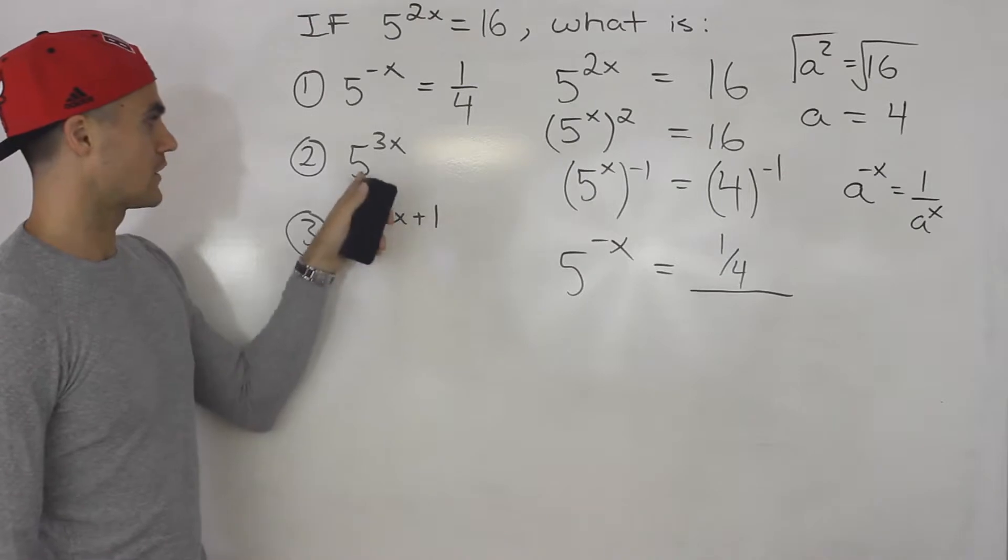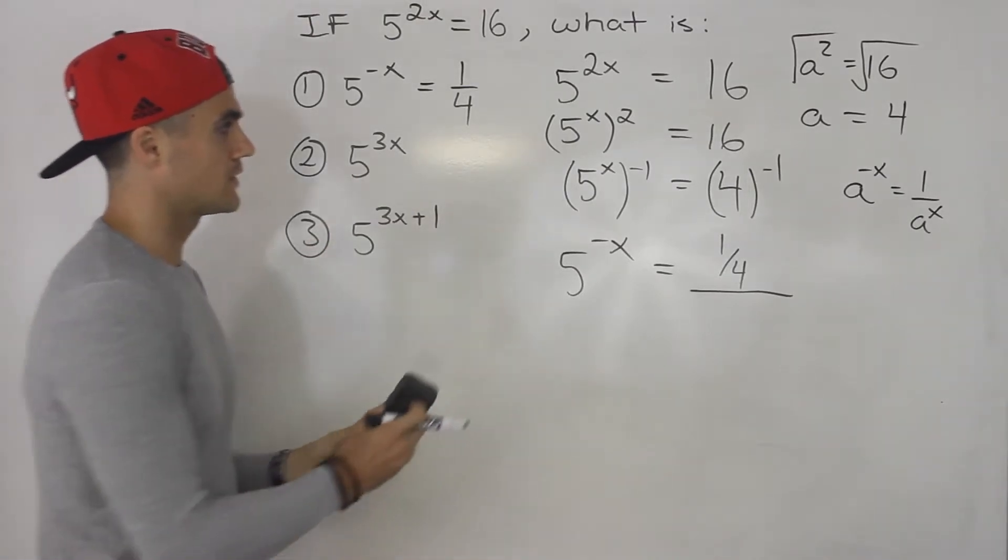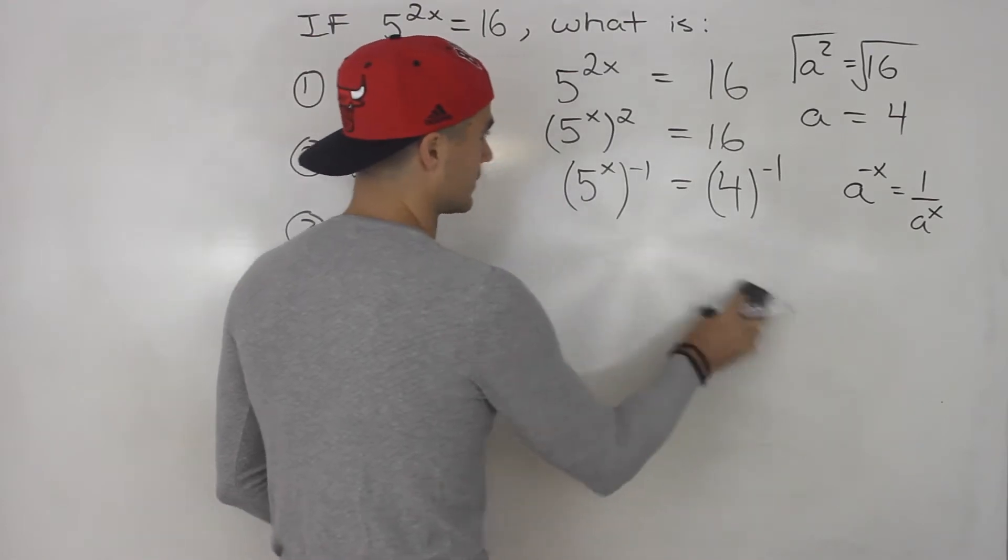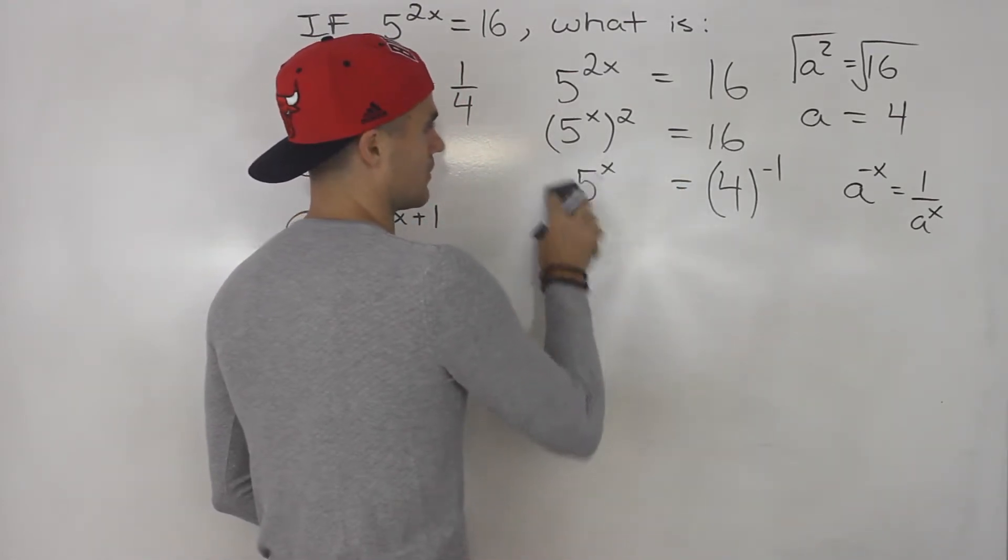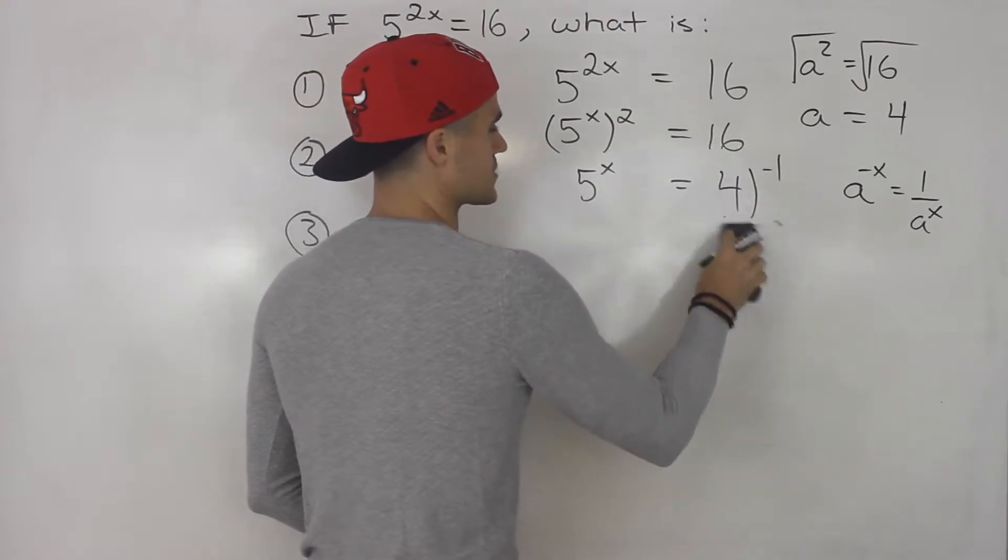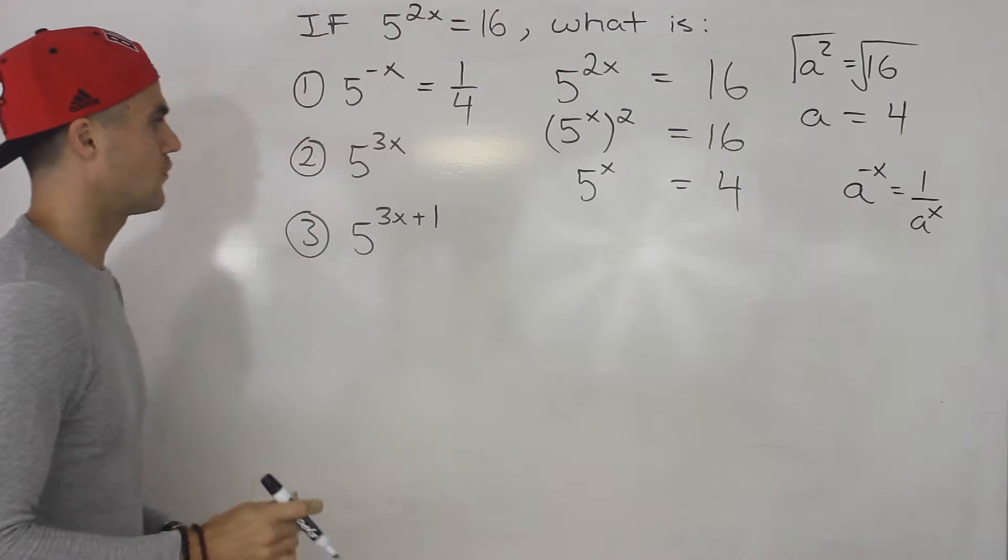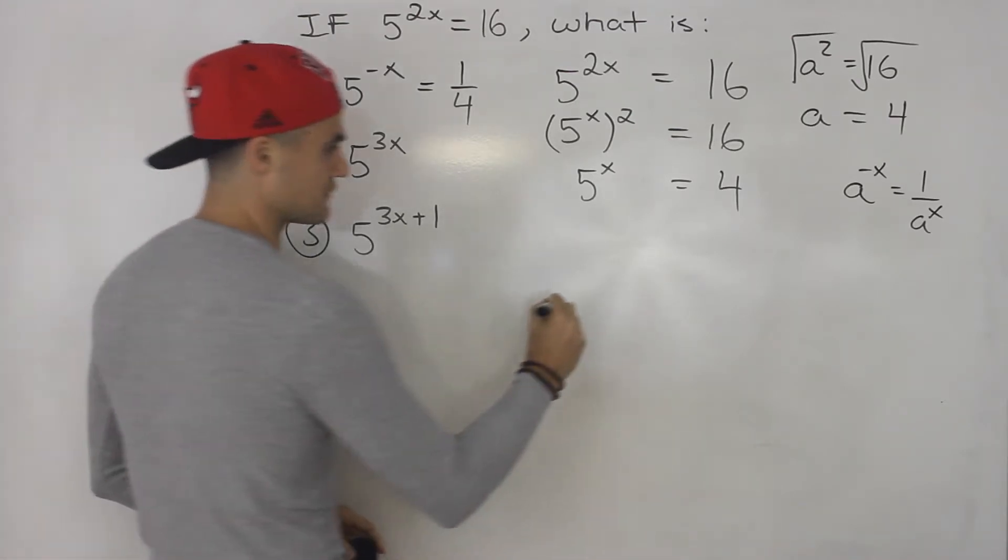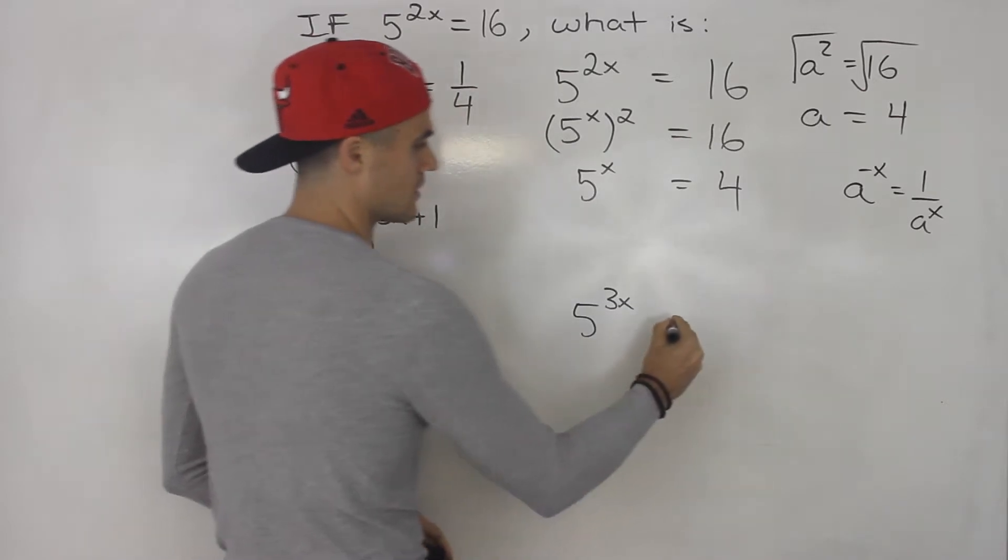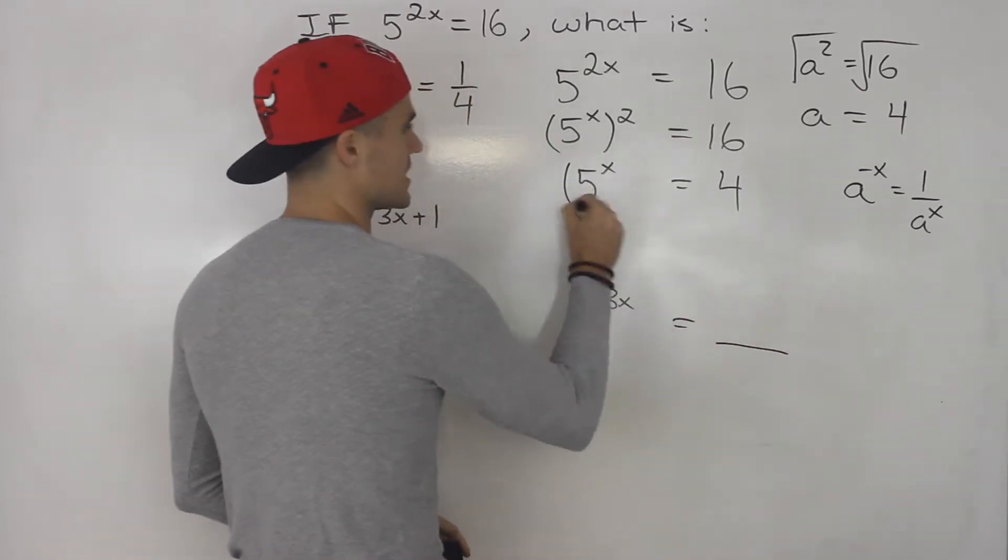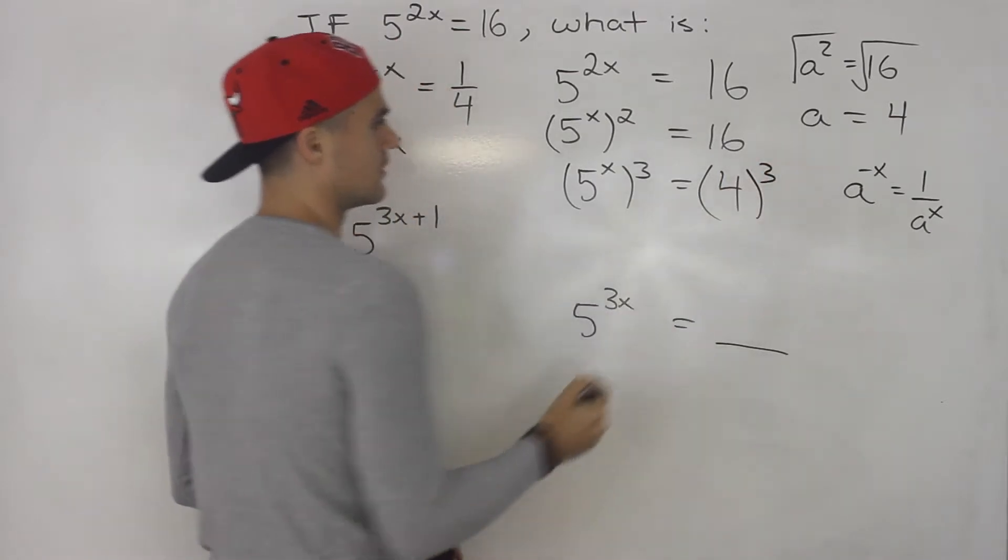Moving on to number 2, we got to figure out an expression for 5 to the 3x. So I would actually leave all of this work here and just maintain this point. So we know 5 to the x is equal to 4. So how can we get to 5 to the power of 3x? Well, we can just take both sides to the power of 3, right? Because 3 times x gives us 3x.